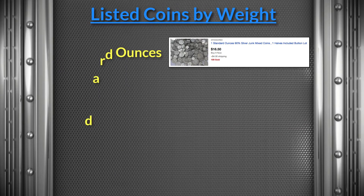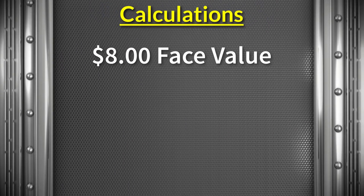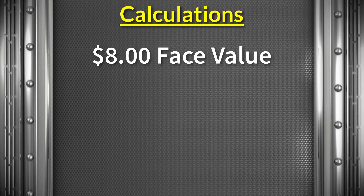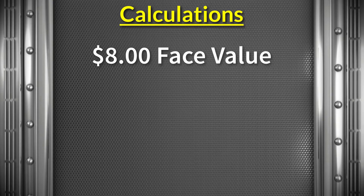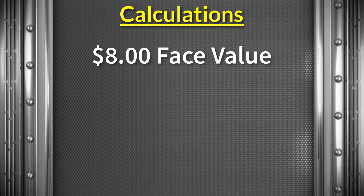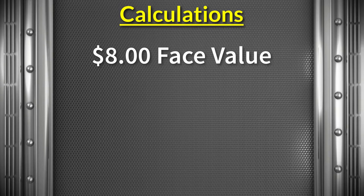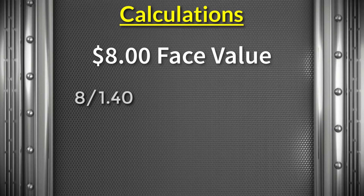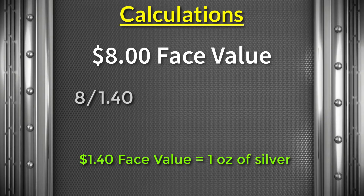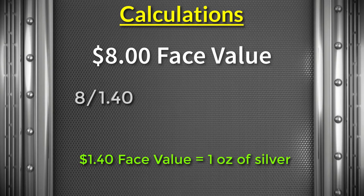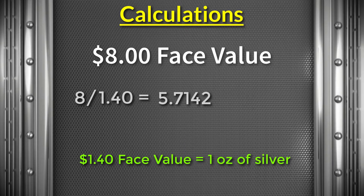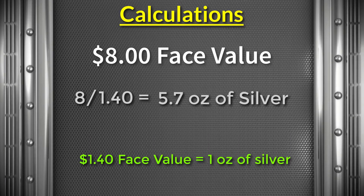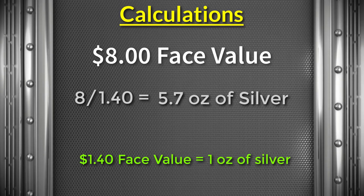Let's take a look at an example. Let's say something is selling for $8 face value in pre-1965 U.S. coins, or junk silver, or constitutional silver. It would be nice to know exactly what those coins were, but it's not necessary to figure out their value. The first approach is to divide $8 by $1.40, because it takes $1.40 of face value to equal 1 ounce of silver. So 8 divided by 1.4 is 5.7142 — there are 5.7 ounces of silver in $8 face value of constitutional silver.